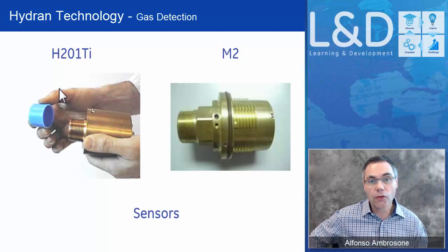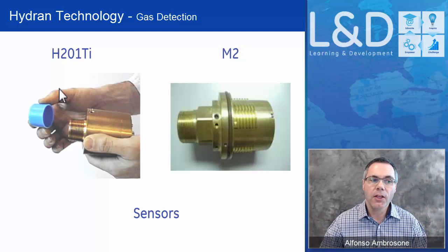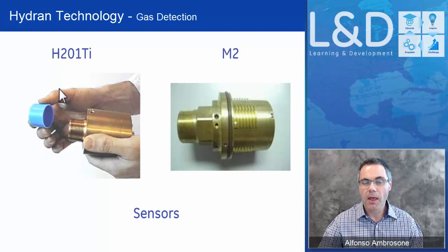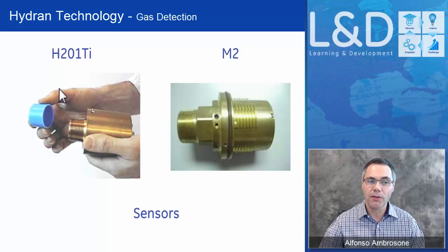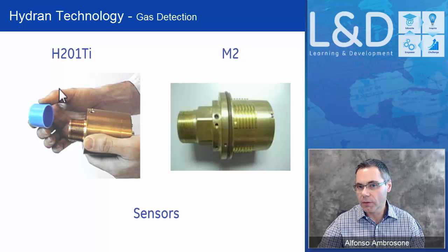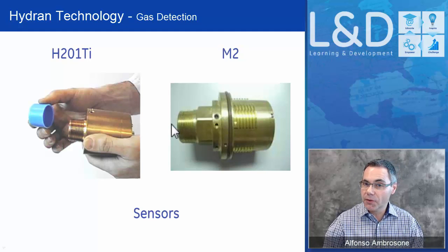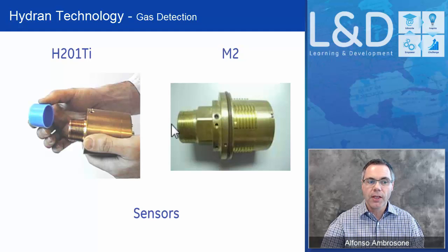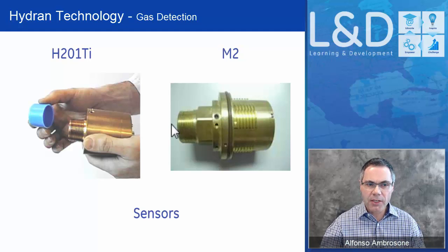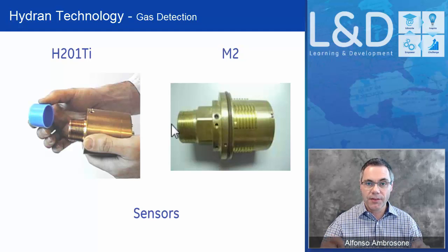We have two products: the Hydran 201 Ti — which I'll refer to simply as Ti — and the Hydran M2. Here you see a photograph of both sensors. You can see a drastic difference in physical dimension between them, but the actual gas detection portion of both sensors is exactly the same. The only thing that changes is that the M2 does a little bit more.